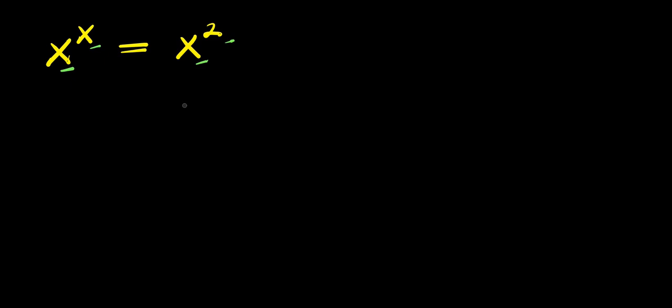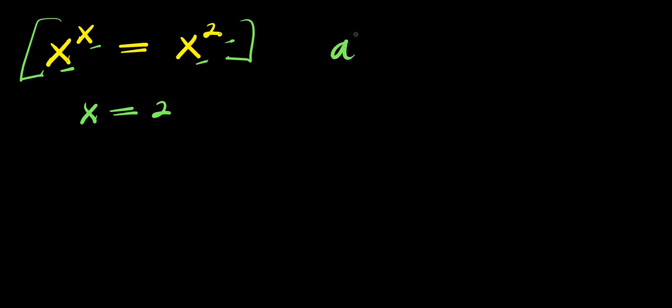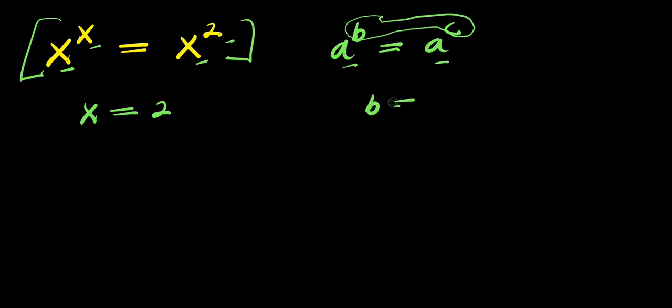Hello. How to solve x to the power of x equals x to the power of 2. We are solving for all values of x that satisfy this equation, and we will also represent those solutions using a graph. Via mere inspection, you can agree that one of the solutions is x equals 2, because if you consider the identity a^b = a^c, when the bases are the same, you can compare the exponents and say b equals c.